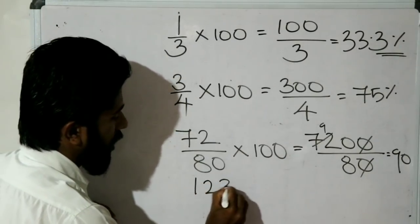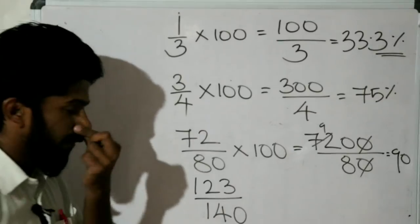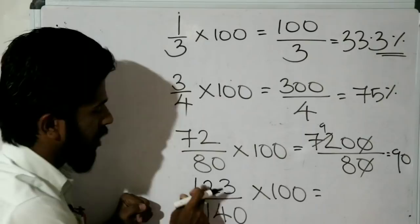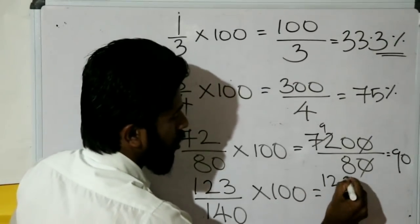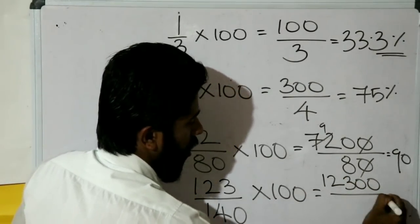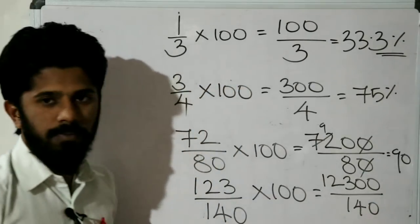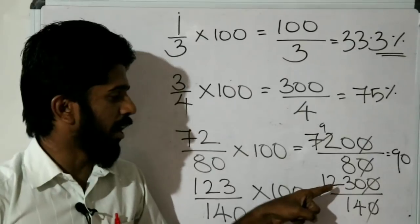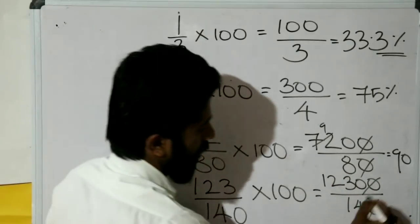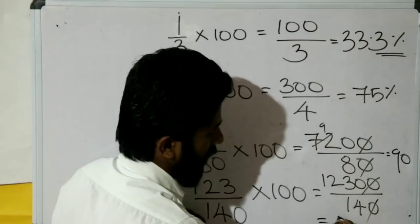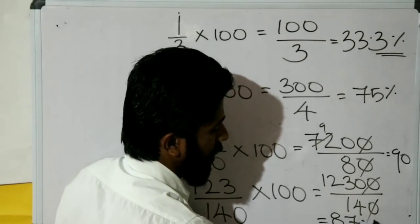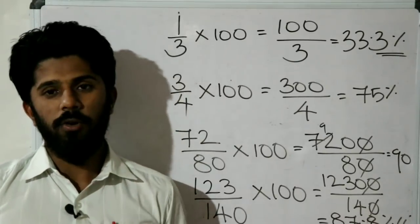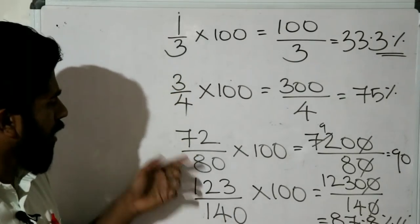Next, last question: 123 divided by 140 into 100 is equal to 12300 divided by 140. Cancel to get 1230 divided by 40. Therefore the answer is 87.8 percentage — approximately 88 percentage.